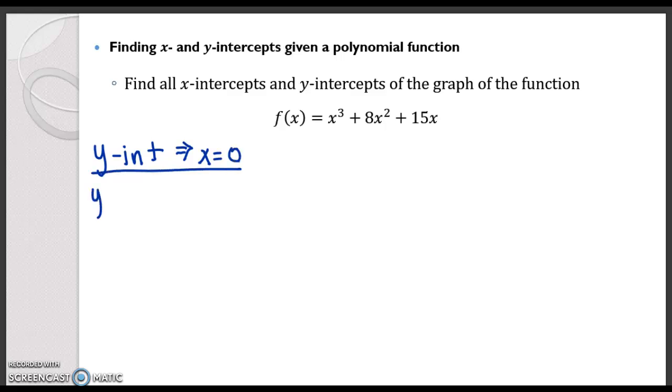So y is going to equal 0 cubed plus 8 times 0 squared plus 15 times 0. We end up getting 0 plus 0 plus 0 which is 0. So when x is 0, y is 0. So we have a y-intercept at (0, 0).